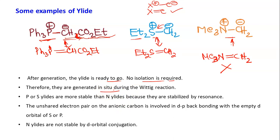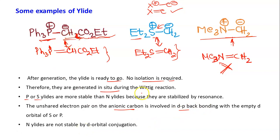Phosphorus and sulfur ylides are more stable compared to nitrogen ylides. The reason: the second resonance form is possible for P and S because the unshared electron pair on the anionic carbon can be donated into the vacant d orbitals of phosphorus or sulfur (dp-π back bonding). This is not possible for nitrogen, which has no vacant d orbitals. Less resonance means less stability. That is why nitrogen ylides are not stable by d-orbital conjugation, and you will hardly see any examples of Wittig reaction involving nitrogen ylides.